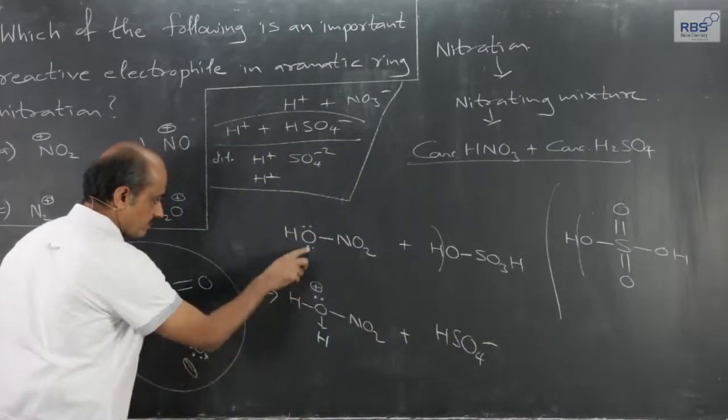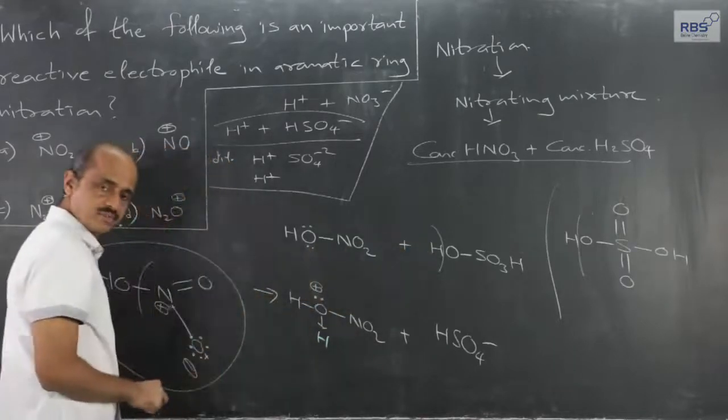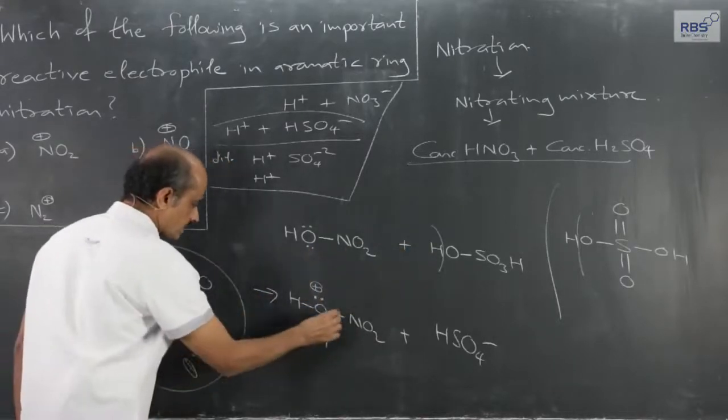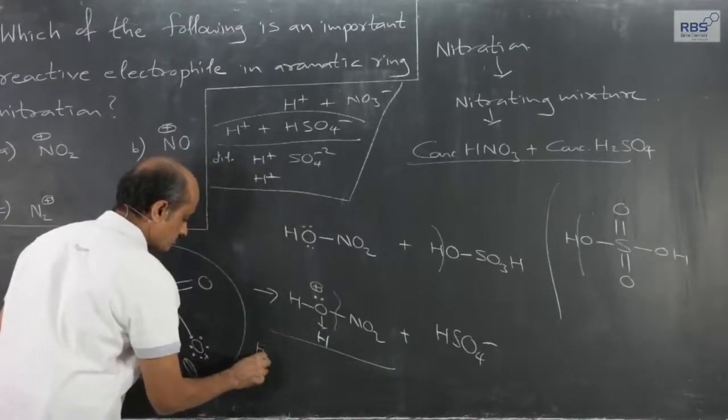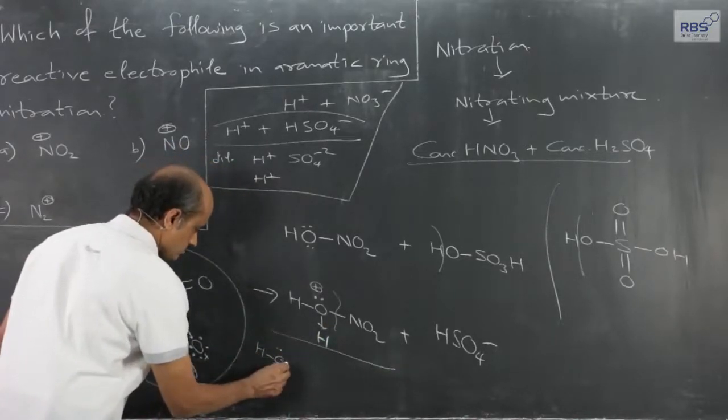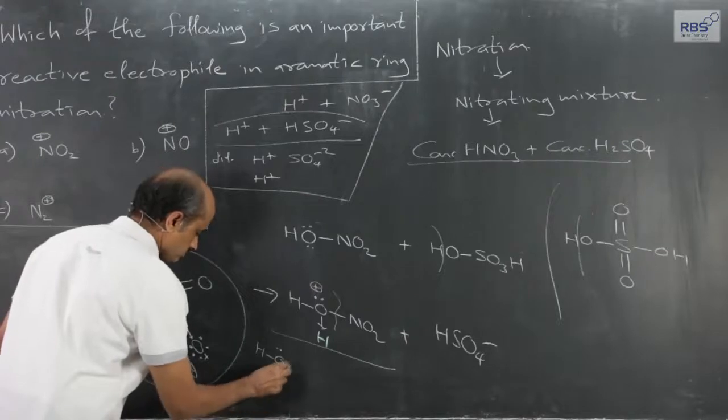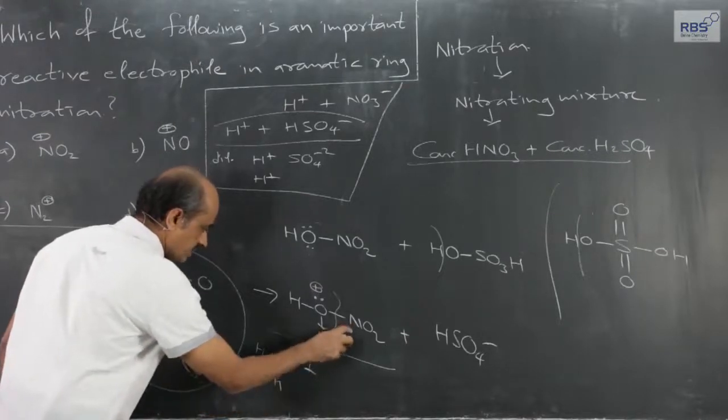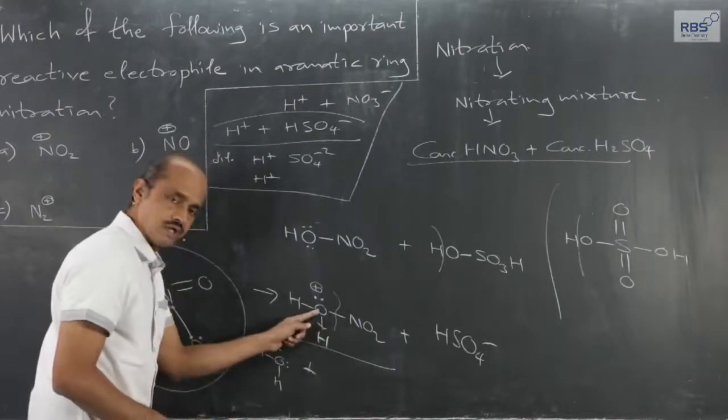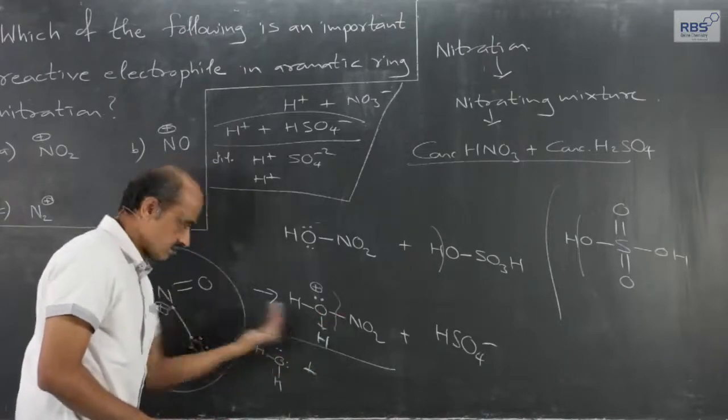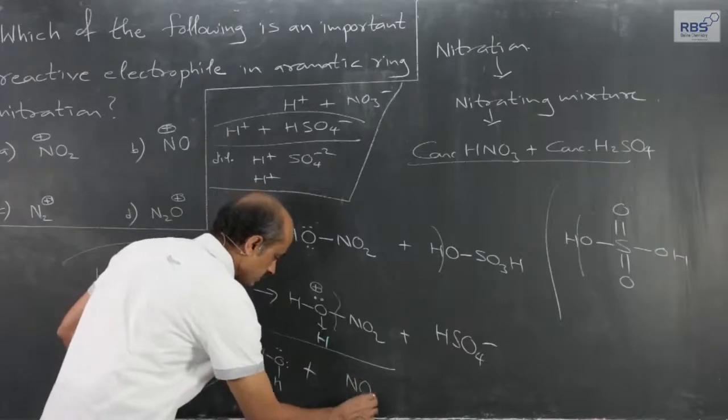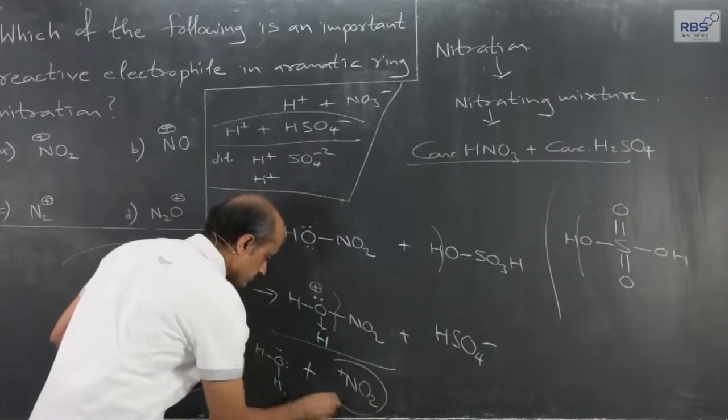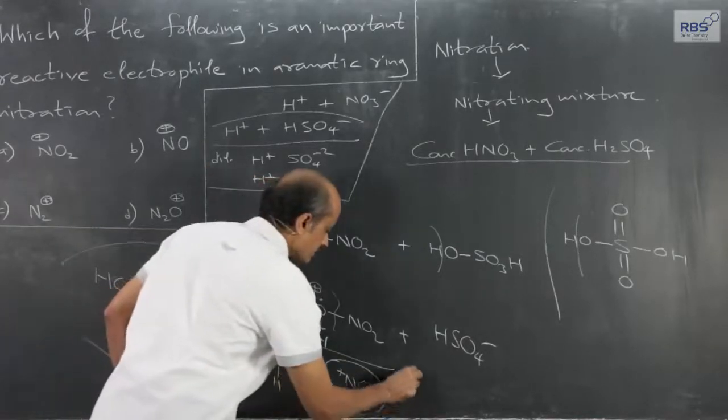Now the lone pair forms a shared pair with this H+. Therefore, hydrolytic breaking of this will take place, giving rise to what remains behind. Oxygen is more electronegative, so the shared pair goes to oxygen. Therefore, what remains behind is NO2+ ion. This is the electrophile.